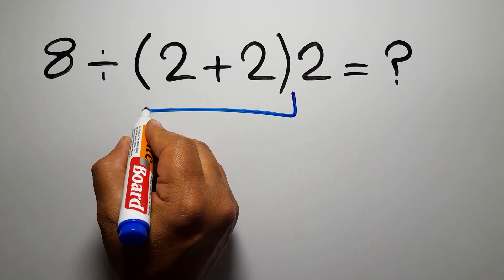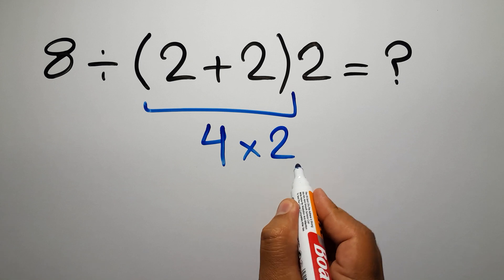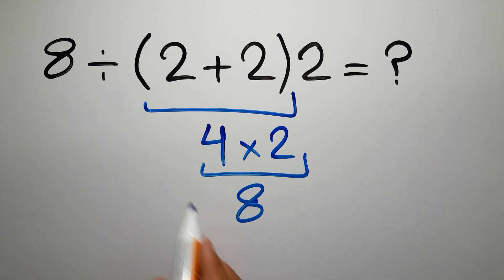2 plus 2 gives us 4, so 4 times 2 is just 8, and 8 divided by 8 gives us 1.